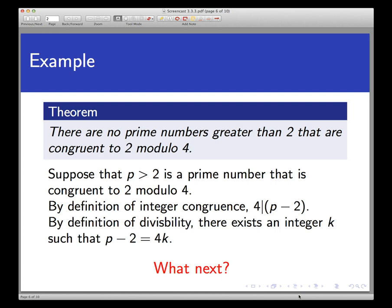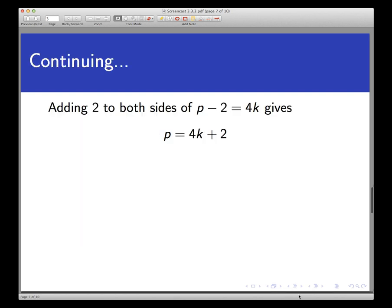And welcome back. You could do a lot of things here, but maybe the most fruitful thing to do is to get p by itself. So if we add 2 to both sides of the equation, p minus 2 equals 4k, we get, of course, p equals 4k plus 2. And here's where things start to unravel.